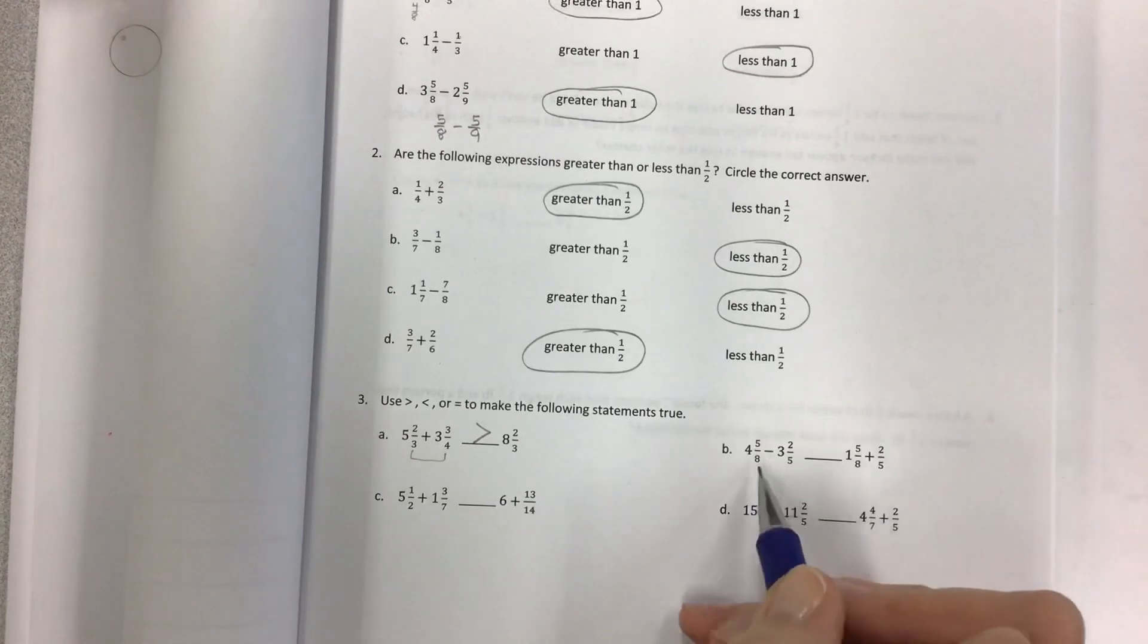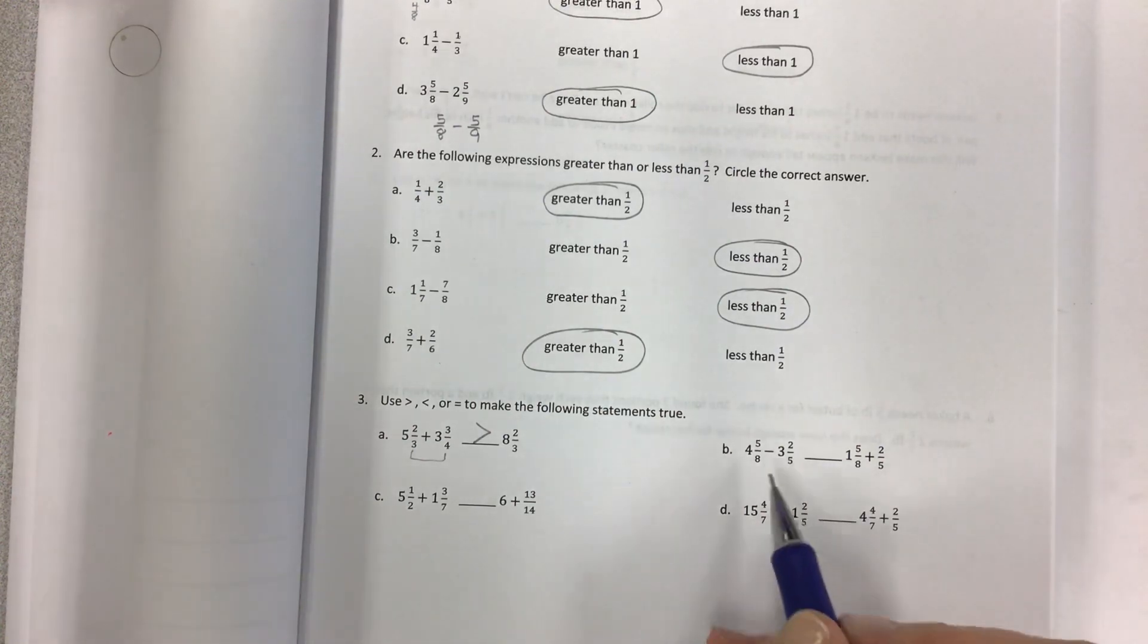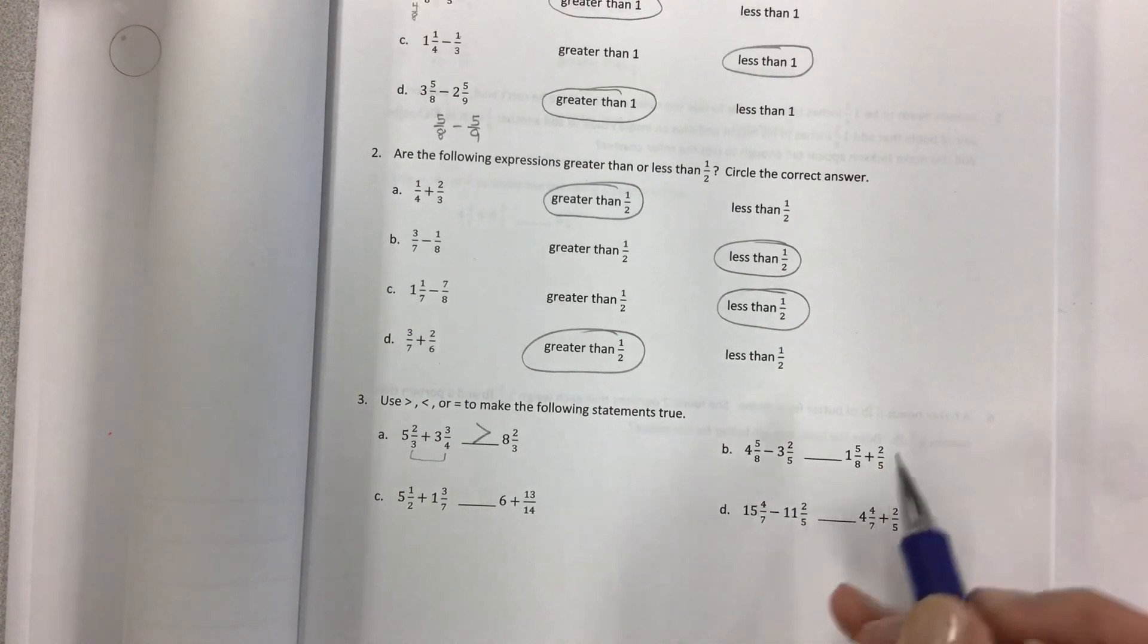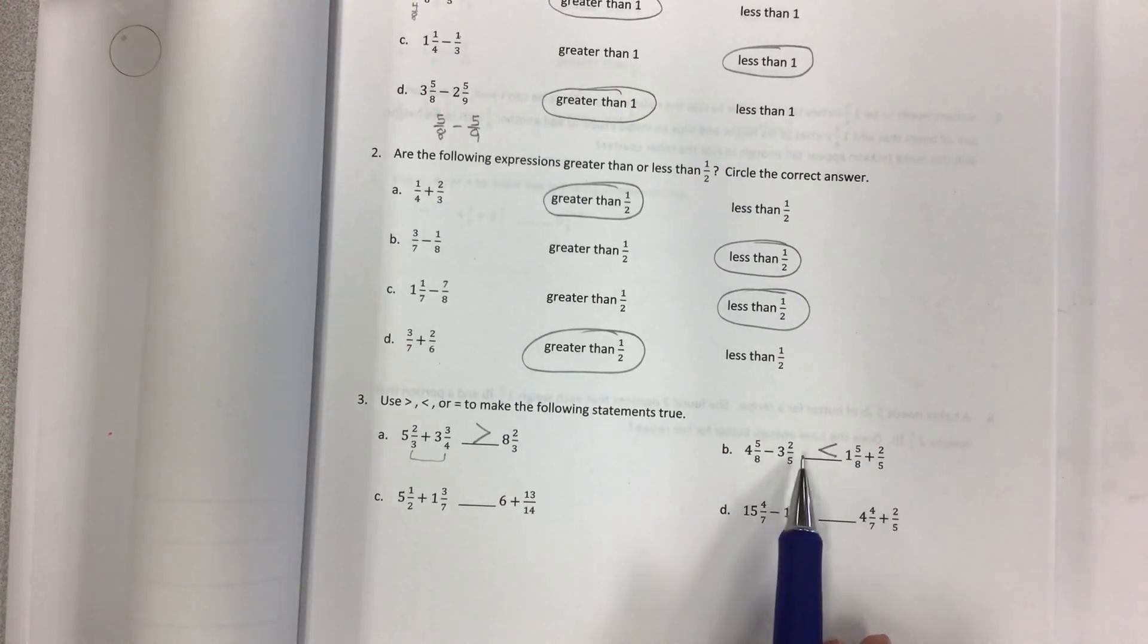And then for B, four and five eighths minus three and two fifths as compared to one and five eighths plus two fifths. So if I was to take this away, I would have one, but I would also have five eighths, which is a little bit more than half, minus approximately a little bit less than half. When I compare with this one, I have one and five eighths, but then I have more. I have almost half here and greater than half here. So if I have greater than half and almost half, I'm getting closer to two, whereas this one is less. So you can have your less than symbol here.